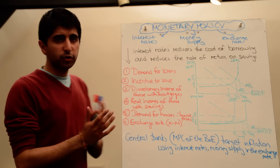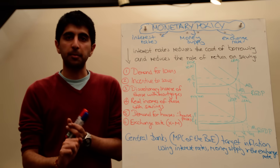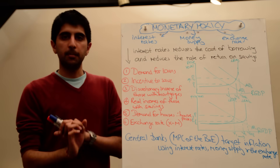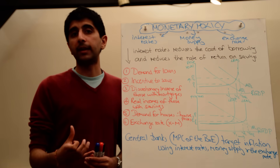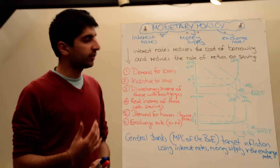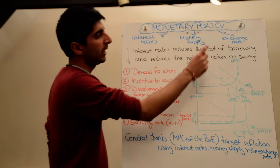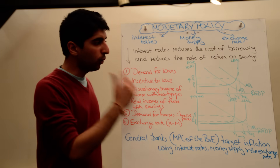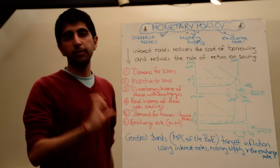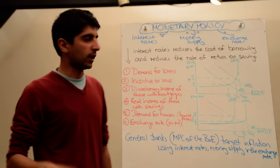When we consider monetary policy, we can have expansionary monetary policy and we can have contractionary monetary policy. Expansionary monetary policy is any monetary policy that increases aggregate demand, whereas contractionary policy is any monetary policy that reduces aggregate demand. A reduction in interest rates, an increase in the money supply, or a reduction in the exchange rate will increase aggregate demand, shifting it to the right — these are all examples of expansionary monetary policy. Vice versa would be examples of contractionary monetary policy.